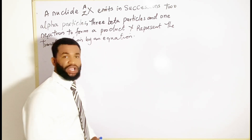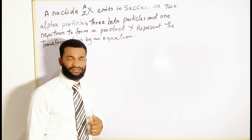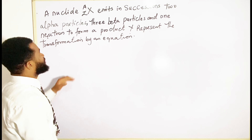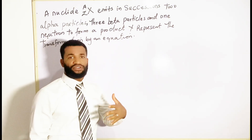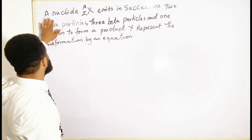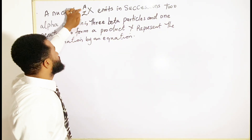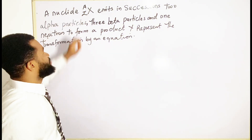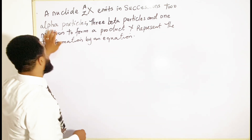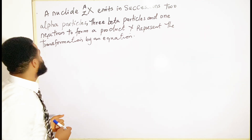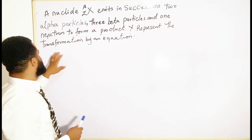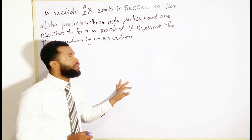Welcome to this class. We are going to deal with this equation in nuclear physics. We have a nuclide of atomic mass A and atomic number Z, which emits two alpha particles, three beta particles, and one neutron to form a product Y. Represent the transformation by an equation.